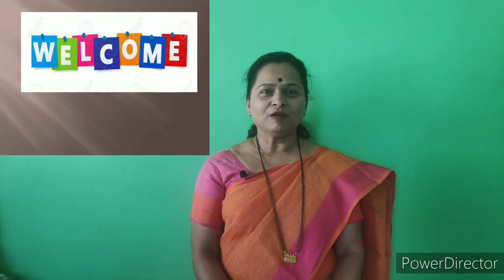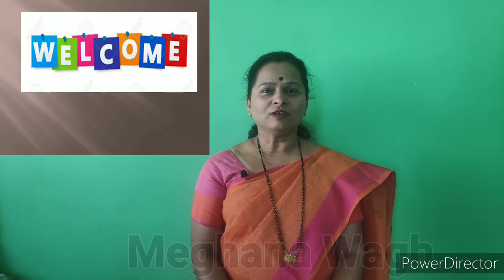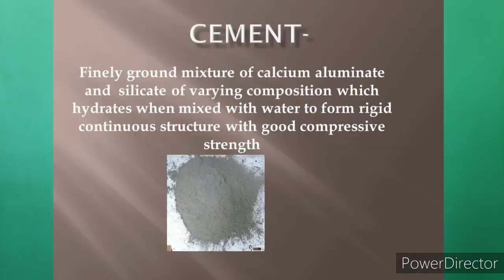Hello everyone. Last time we discussed the first chapter on metal alloys. Now the second part of the first chapter is cement. Cement is the finely ground mixture of calcium aluminate and silicate of varying composition, which hydrates when mixed with water to form a rigid continuous structure having good compressive strength.